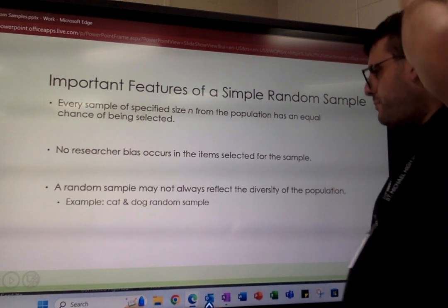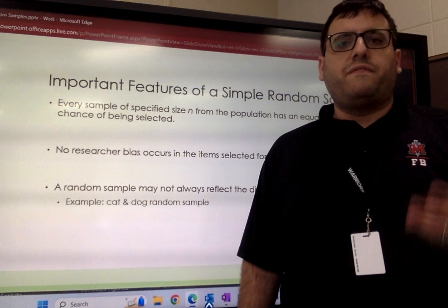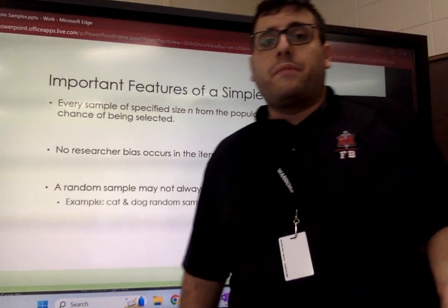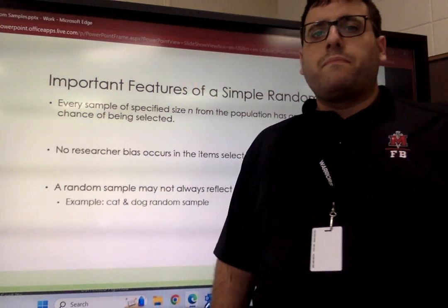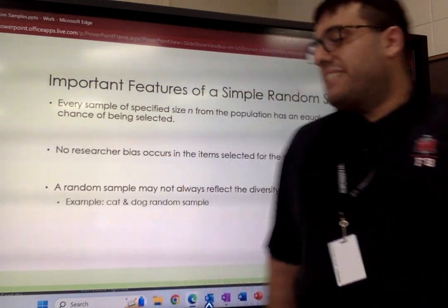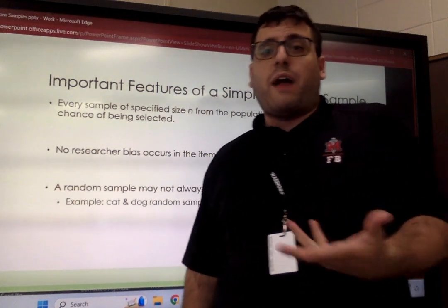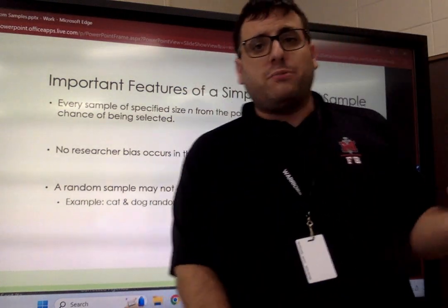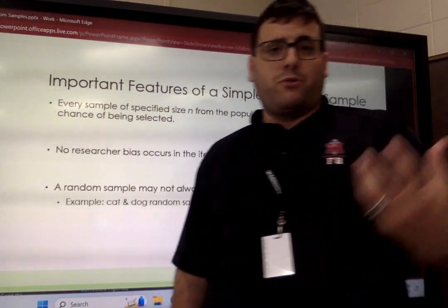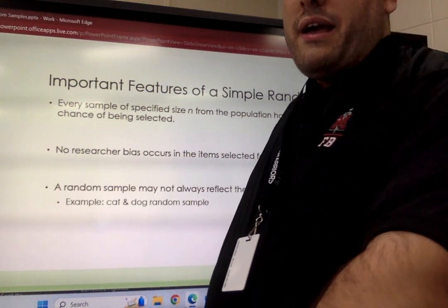A disadvantage is that a random sample may not always reflect the diversity of the population. For example, if I'm pulling a random sample from a room of ten cats and dogs — ten total animals — and I pull a sample of size six, every combination of those six has an equal chance of being selected. But if I happen to choose six cats or six dogs, that sample may not reflect the diversity of the population, and the data from it may not reflect the population data either. Data from a sample varies from sample to sample, so a random sample may not always reflect the diversity of the population. Just got to be careful in how we conduct that sample.